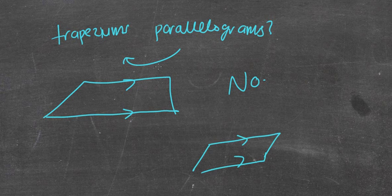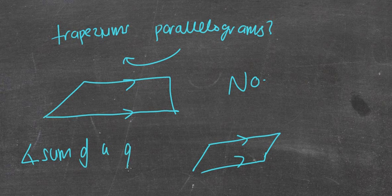Hope you found that useful. Make sure you learn your properties of your quadrilaterals, and make sure you remember the angle sum — your most important thing: the angle sum of a quadrilateral equals 360 degrees. And remember that a regular quadrilateral is called a square. Have a good day.